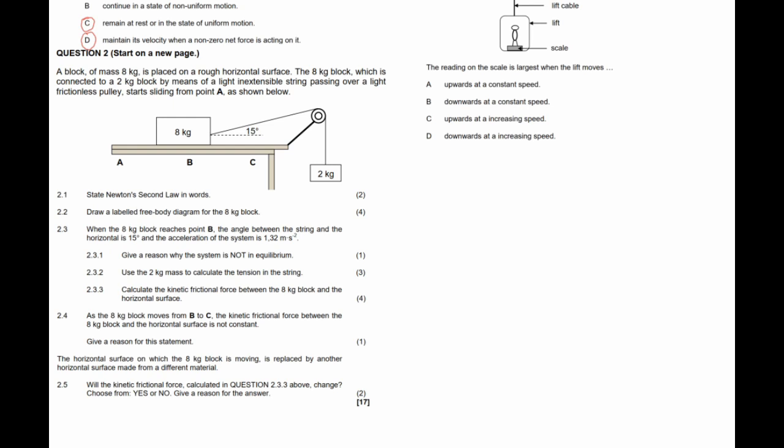Question 1.2: A person stands on a bathroom scale fixed to the floor of a lift. It's important to remember that the tension in the lift cable will generally give the same reading as what is seen on the scale. When the lift accelerates upward, we find a greater reading than the weight of the person, because the person always has a constant force of gravity pulling them downward.